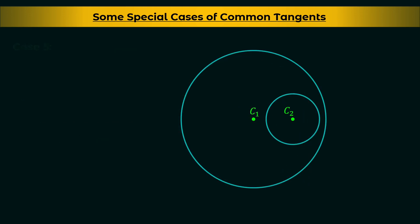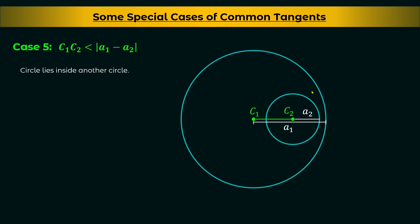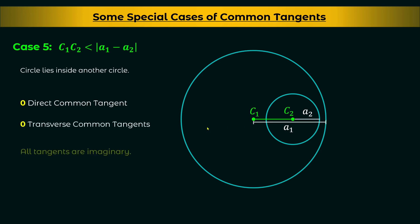In the final case, C1C2 < |A1 − A2| — the distance between the centers is less than the difference of the radii. In this case one circle lies entirely inside the other. You can draw zero direct common tangents and zero transverse common tangents — all tangents are imaginary and no tangent is real.